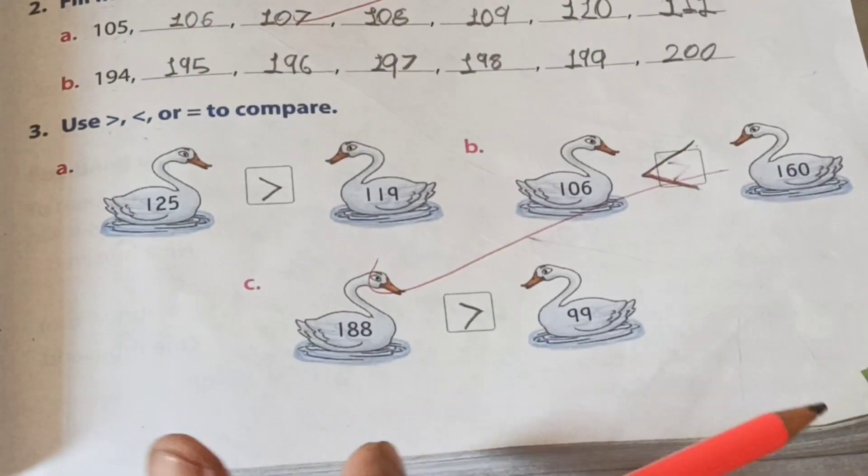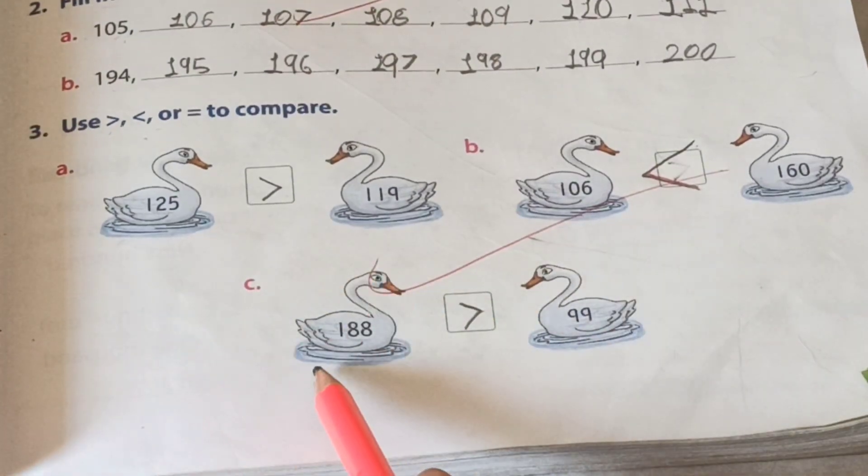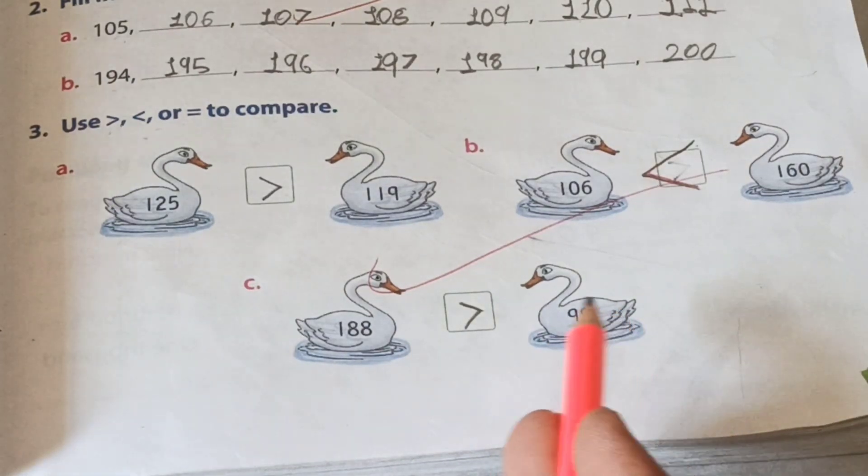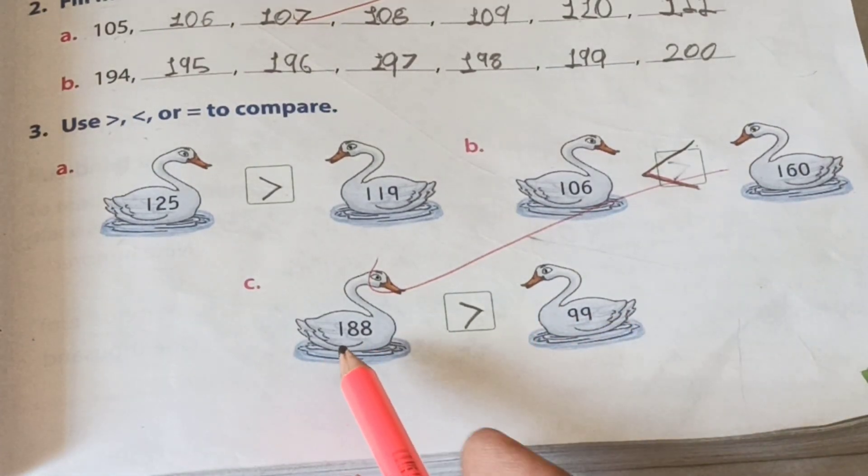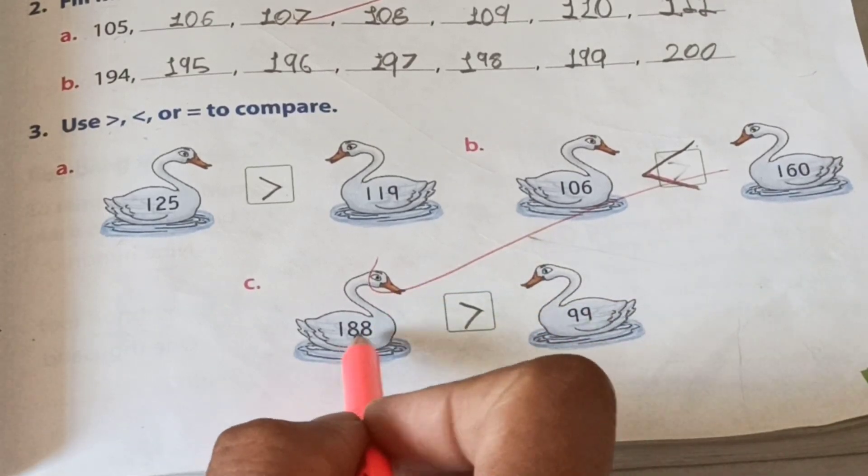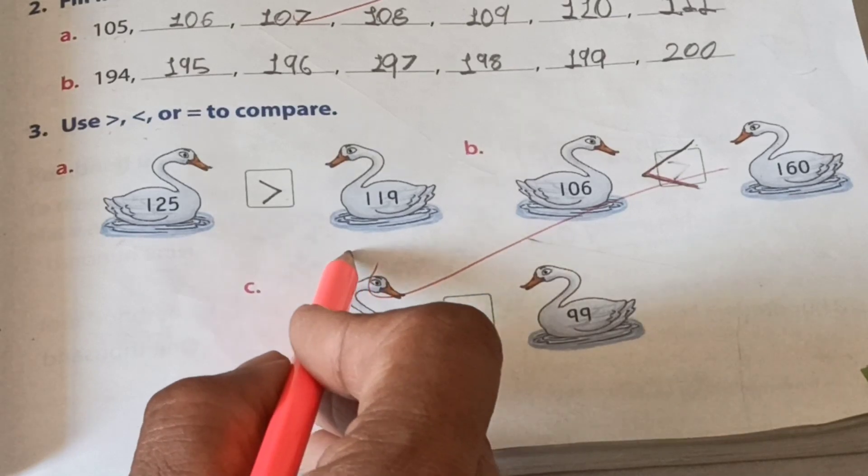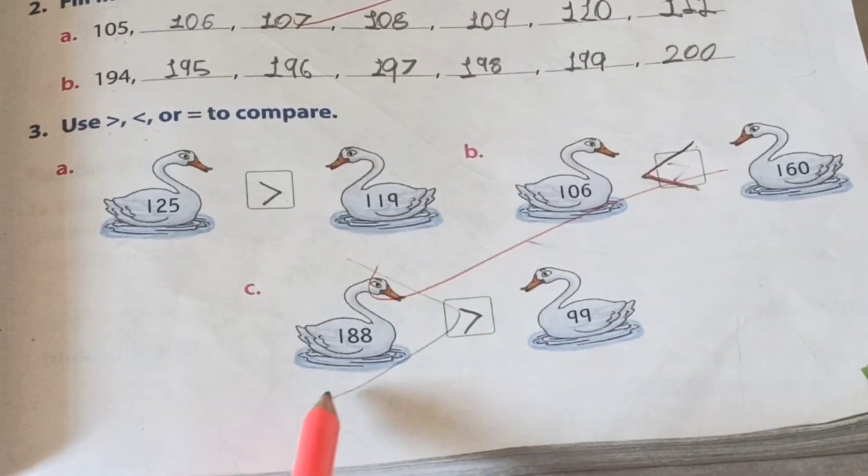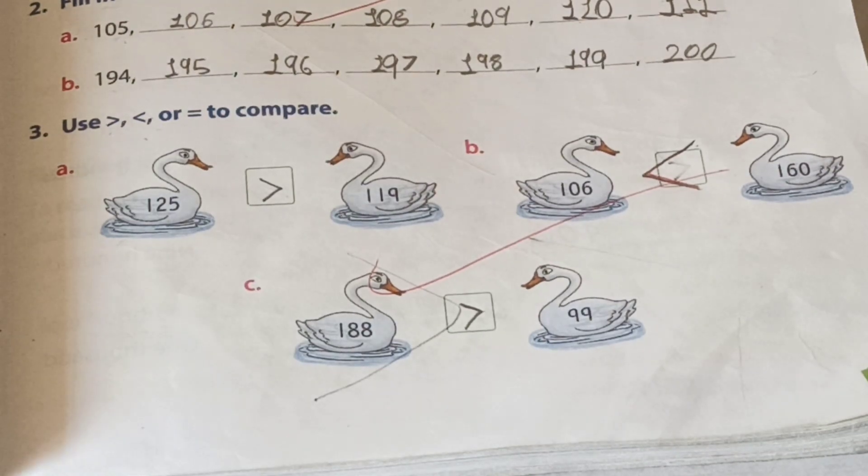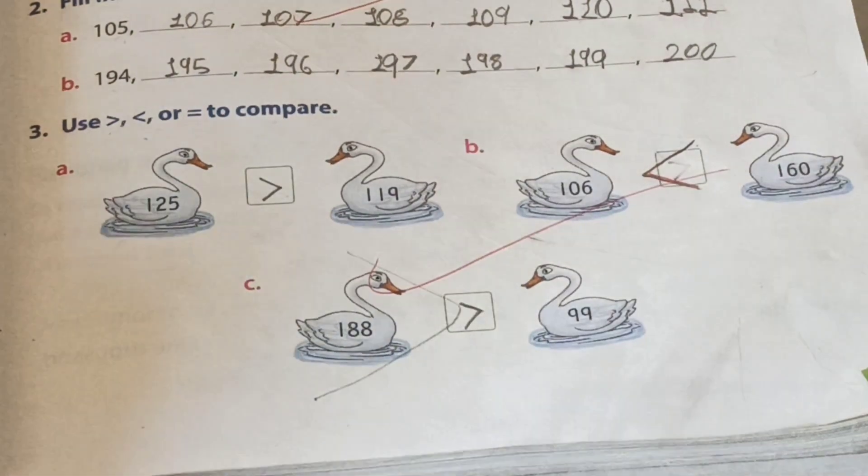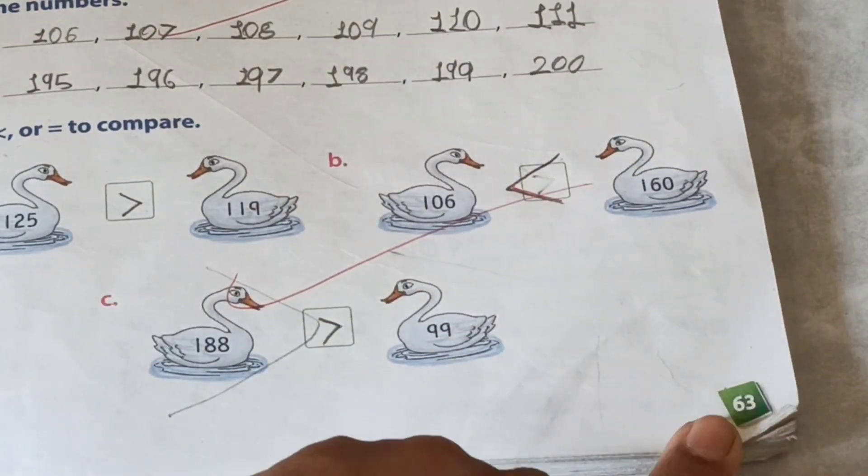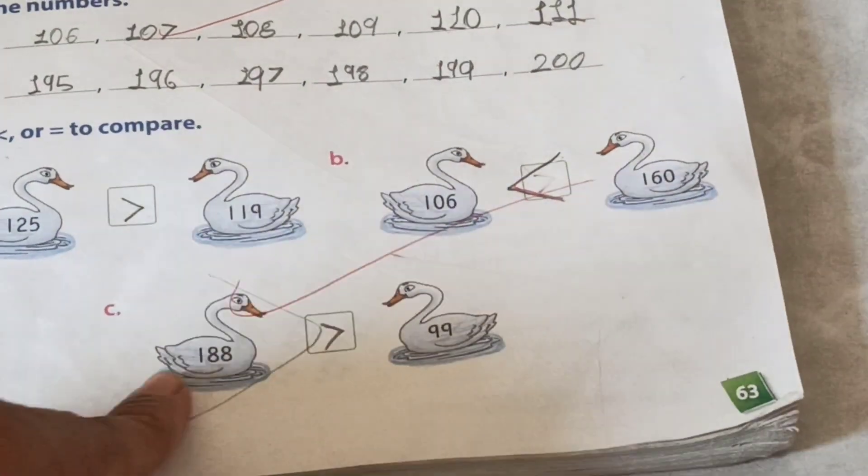Yes, next. See, one hundred eighty and one hundred ninety. Which is bigger? One hundred eighty. So crocodile wants to eat this one. Yes, this type. Okay. This page sixty-three we learn today.